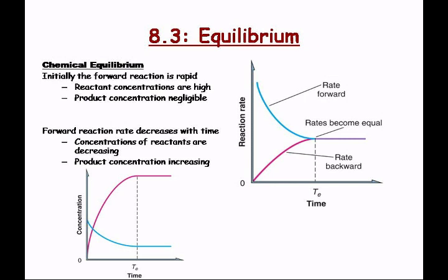So if we look at these two different graphs, we can see two different things about equilibrium. Initially, the forward reaction is rapid — this is the concentration, or the rate of the forward reaction. The reaction rate goes quickly when the reactant concentrations are high. The product concentrations are negligible — they have zero concentration — and they increase as the reaction progresses. So the rate increases as the reaction progresses.